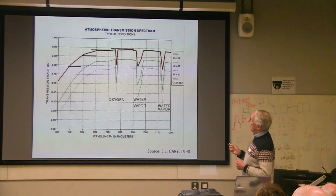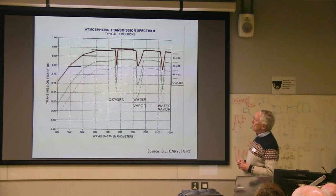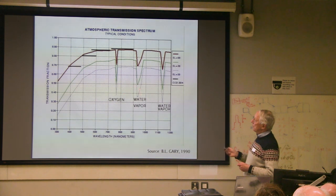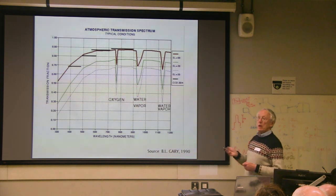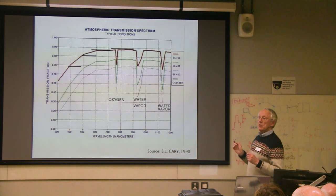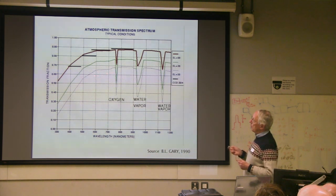These curves are for different elevation angles; for horizon propagation they'd be lower. At around 750nm there's a big absorption due to oxygen, and at about 950nm — where TV remote controls work — there's a water vapor absorption band. Those are places you'd want to avoid for line-of-sight through the atmosphere.